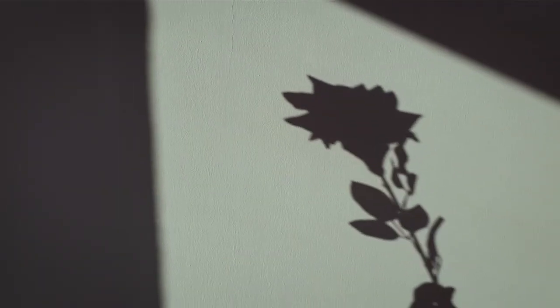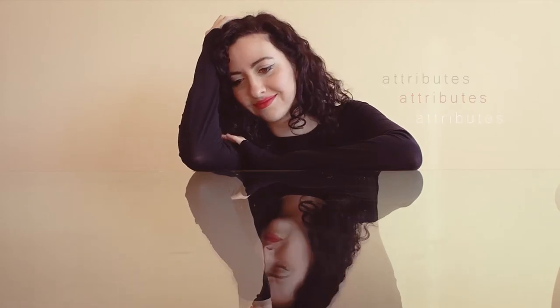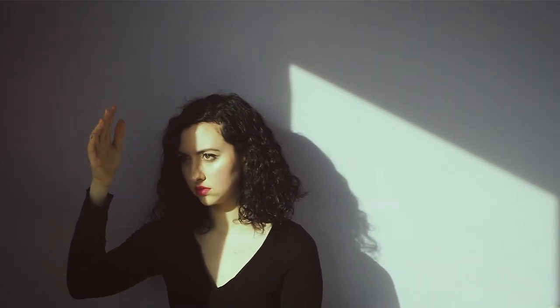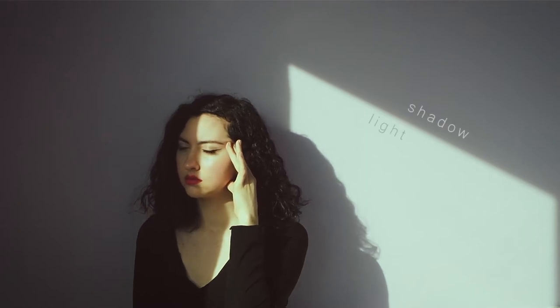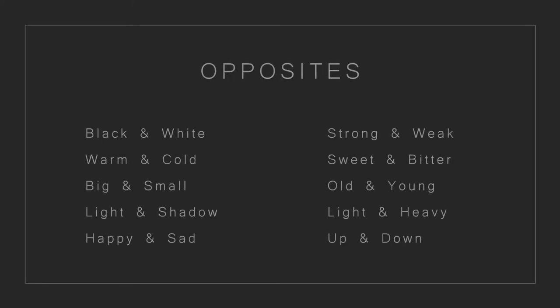The first exercise is about thinking of opposites. They can be abstract or tangible. You can find opposites in emotions, in attributes, or even in your own personal life experiences. Write them down and once you have a list of opposites, pick one and think of taking a picture that could blend or combine both in one picture. For this exercise as an example, I picked light and shadow and I created the following picture. Some examples of opposites could be black and white, warm and cold, big and small.